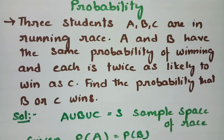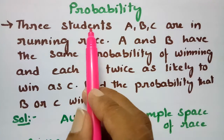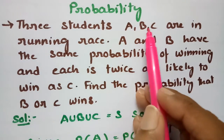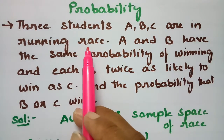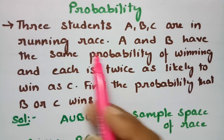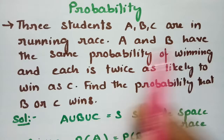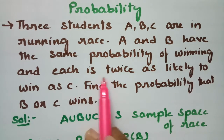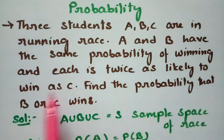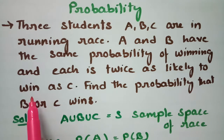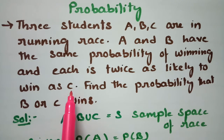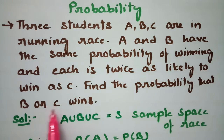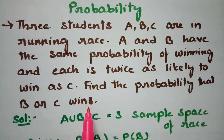In today's video, I am going to explain the most important problem from probability. There are three students A, B, C in a running race. A and B have the same probability of winning, and each is twice as likely to win as C. Find the probability that B or C wins.